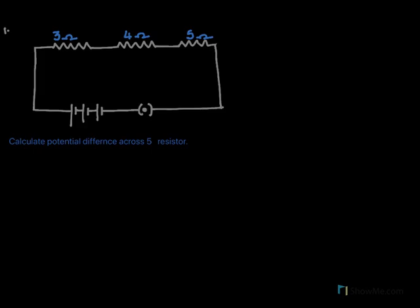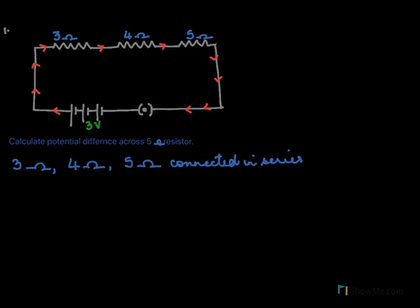In the following circuit diagram we need to calculate the potential difference across the 5 ohm resistor. To calculate the potential difference, first we must know what is the current flowing in the circuit. There is a battery of 3 volts, and from this battery a current flows through all three resistances — 3 ohms, 4 ohms, and 5 ohms. The same current flows through all three, so we can say the three resistances are connected in series.